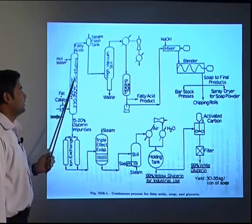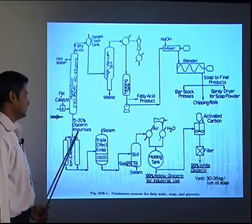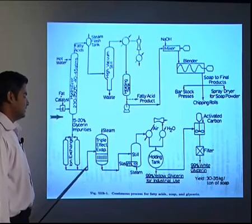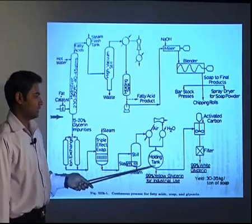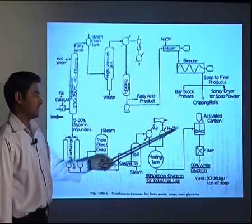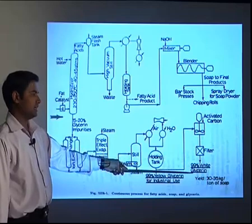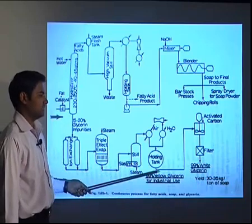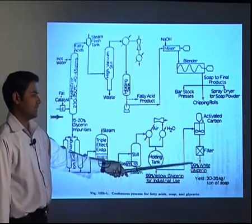Hot water is added to carry out the hydrolysis. The fatty acids are formed and the other stream is 15 to 20 percent glycerin with impurities. This stream is sent to ion exchange to remove impurities from the fats and the catalyst. Then the purified glycerin is sent to the triple effect evaporator and then to a holding tank, and it is sold as 99 percent yellow glycerin for industrial use. Alternatively, the yellow glycerin can be sent to activated charcoal to produce white glycerin, filtered to give 99 percent white glycerin. The yield in this process will be around 30 to 35 kg per ton of soap.